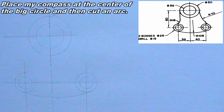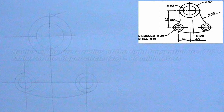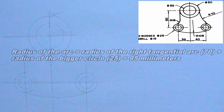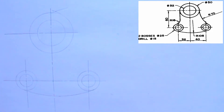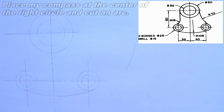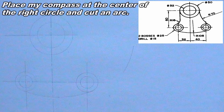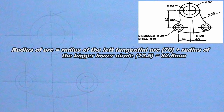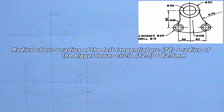I will also produce the tangential arc at the right. To produce the tangential arc at the right, I will place my compass at the center of the big circle, then I will cut an arc with radius equal to the radius of the right tangential arc plus radius of the bigger circle, that is 70 plus 25 which is equal to 95mm. I will also place my compass at the center of the right circles, then I will cut an arc of radius equal to the radius of the left tangential arc plus radius of the bigger lower circle, that is 70 plus 12.5 which is equal to 82.5mm. This arc should intersect the previous arc.